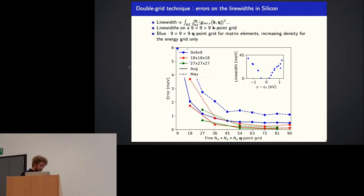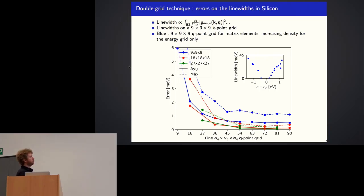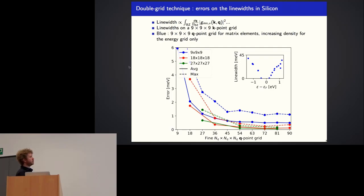How does that help? Looking at silicon, for the 9×9×9 case we use the same Q point grid for both matrix elements and energies. But then we densify the grid for the energies: using a 9×9×9 grid for matrix elements but an 18×18×18 grid for energies, we can really reduce the error. Using an 18×18×18 grid for matrix elements and increasing the energy grid density gives a result very similar to using a full 18×18×18 grid for both matrix elements and energies.